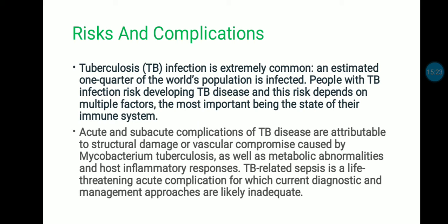The risks and complications: tuberculosis infection is extremely common, and an estimated one quarter of the world's population is infected. People with TB infection risk developing TB disease, and this risk depends upon multiple factors, the most important being the state of their immune system. Acute and subacute complications of TB disease are attributable to structural damage or vascular compromise caused by the bacteria, as well as metabolic abnormalities and host inflammatory responses. TB-related sepsis is a life-threatening acute complication for which current diagnostic and management approaches are likely inadequate.